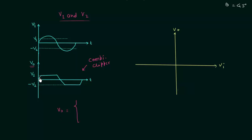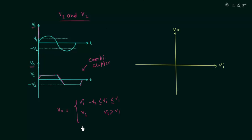The output voltage VO is equal to the input voltage VI when VI is greater than or equal to minus V2 and less than or equal to V1. The output voltage is equal to V1 when input voltage VI is greater than V1. The output voltage is equal to minus V2 when VI is less than minus V2.